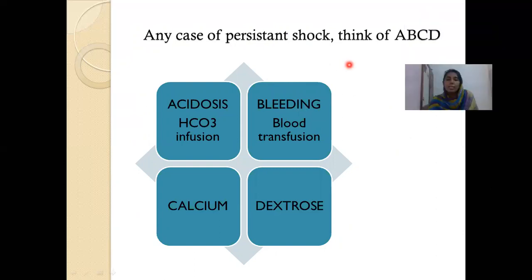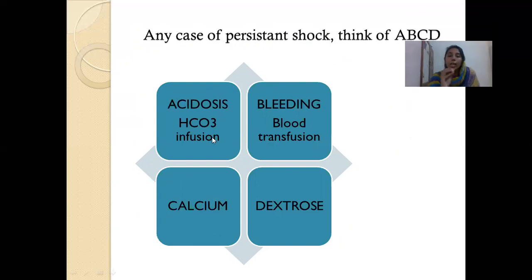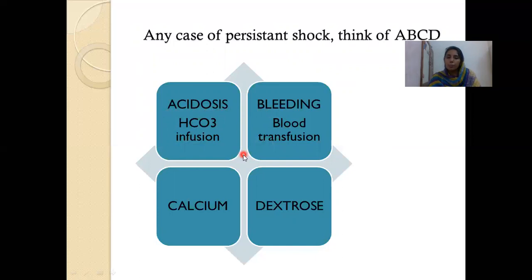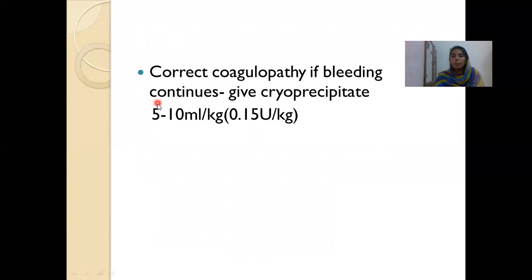In any case of persistent shock, think ABCD — Acidosis, Bleeding, Calcium, Dextrose — and correct all. For acidosis in dengue: we are more proactive; even at pH less than 7.3 we can give bicarbonate infusion of 1 mL per kg per minute. In septic shock we give bicarb only at pH less than 7.15, but in dengue we treat it earlier because acidosis can precipitate bleeding. Correct hypocalcemia with calcium and hypoglycemia with 10% dextrose at 2 to 4 mL per kg.